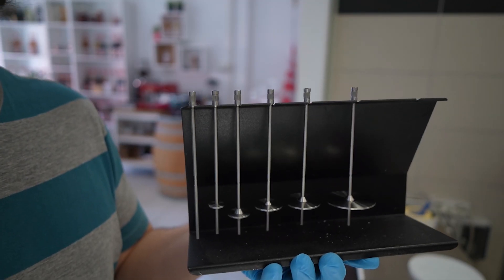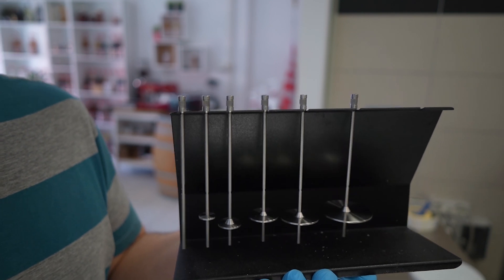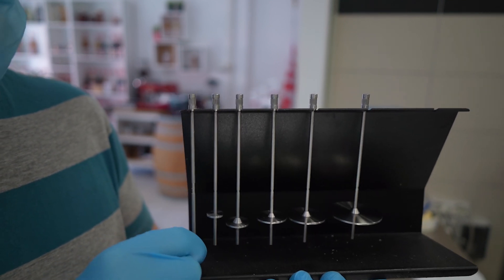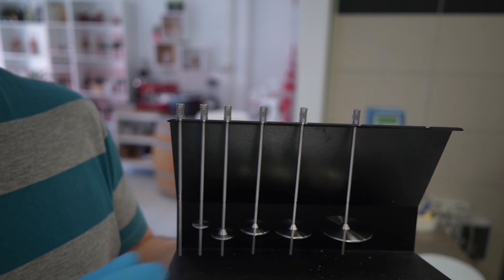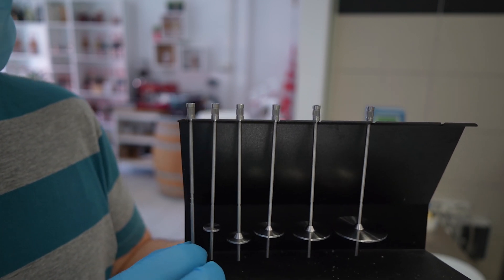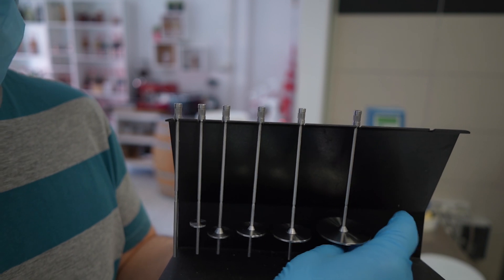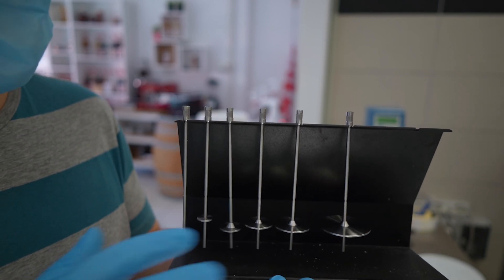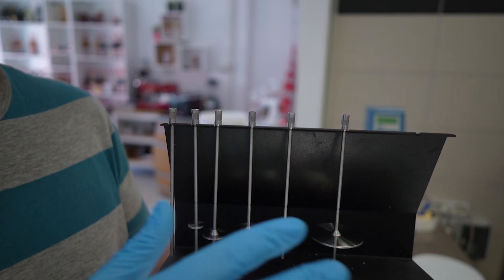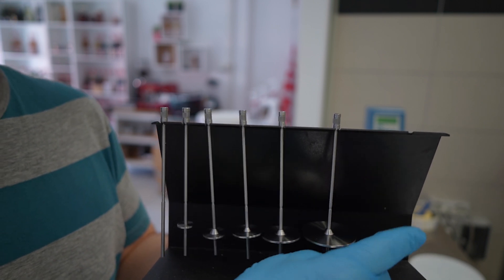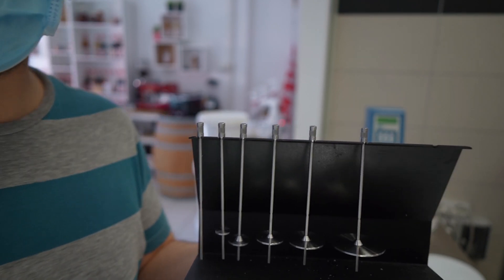These are all the spindles of the viscosimeter, from smallest to biggest. With the smallest we can measure higher viscosities, and with the bigger, lower viscosities. But we cannot go much lower than 50 centipoise or millipascals per second.